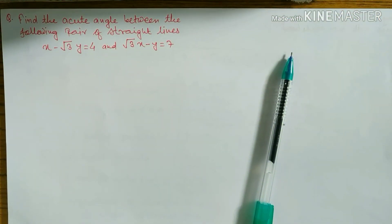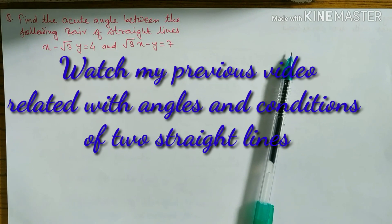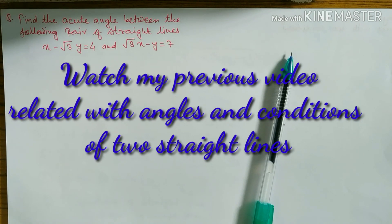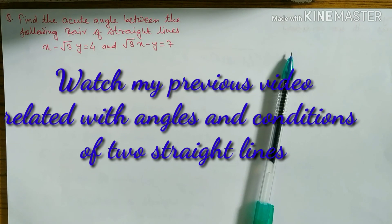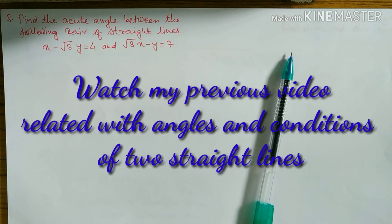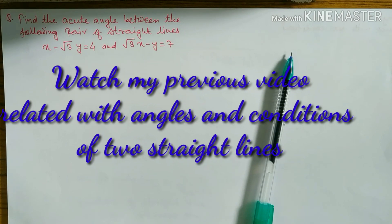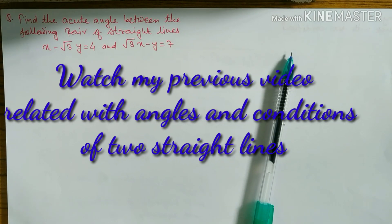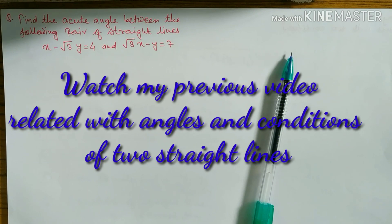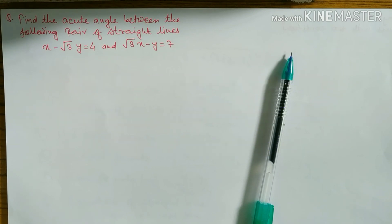Hello everyone, once again you are welcome on my YouTube channel. This question is taken from coordinate geometry of class 10. The question asks us to find the acute angle — acute angle means between 0 to 90 degrees, in the first quadrant — between the following pair of straight lines.